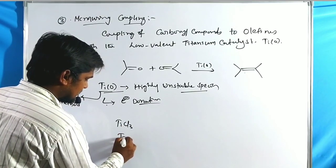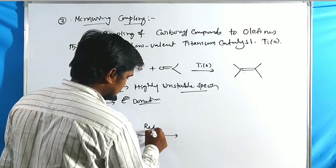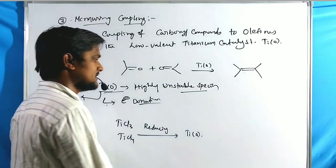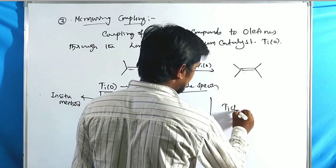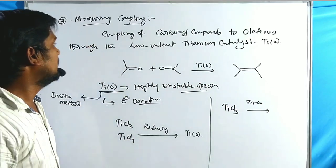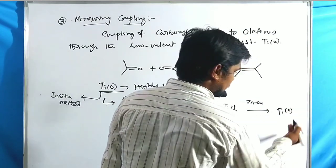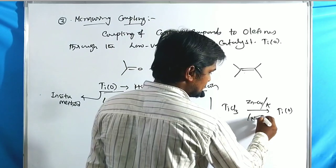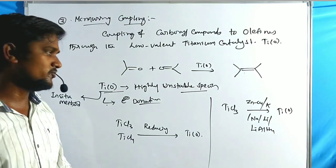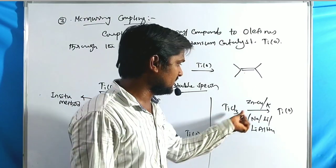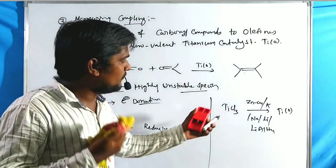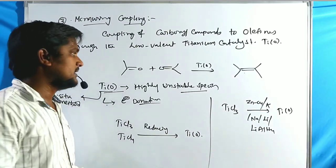Titanium zero is prepared in-situ from TiCl₃ or TiCl₄ under reducing agents, which converts them into the titanium zero catalyst. Common reagents used include zinc-copper, metals like sodium, potassium, lithium, or lithium aluminum hydride. These are the low-valent titanium preparation methods.